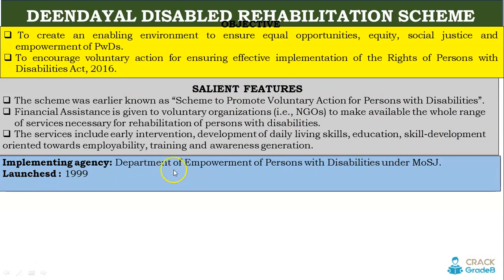The implementing agency is the Department of Empowerment of Persons with Disabilities under the Ministry of Social Justice. The government launched this scheme in 1999. The key point is that the government will provide financial assistance to NGOs, and these NGOs will work for persons who are physically handicapped — providing livelihood skills, education, skill development, employability training, and awareness generation. This will help persons with disabilities to improve their livelihood and achieve self-development with self-reliance.